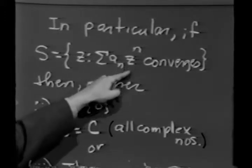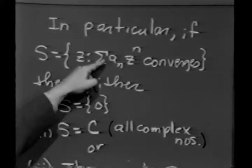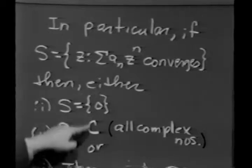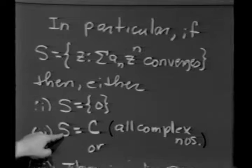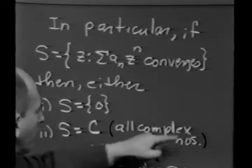Or it may be such that these terms go to 0 so rapidly that this will converge for all complex numbers. In other words, the set S can be all complex numbers.